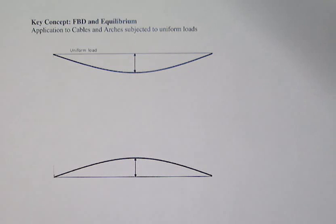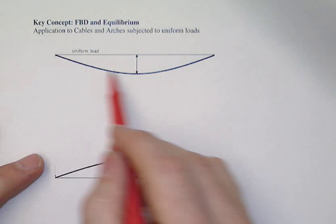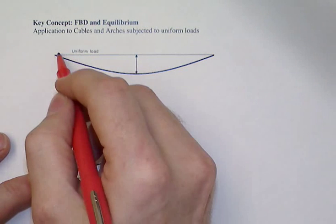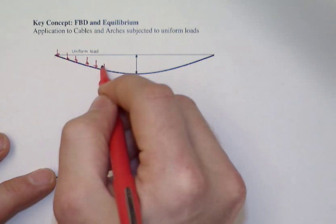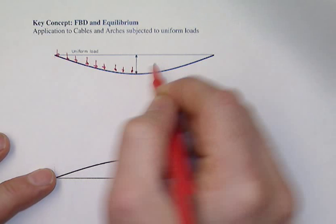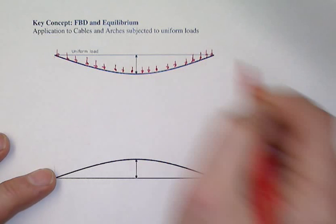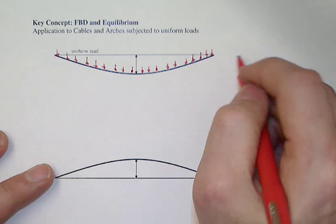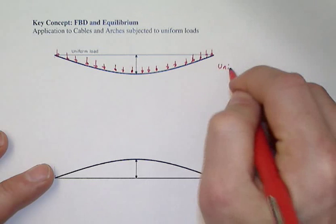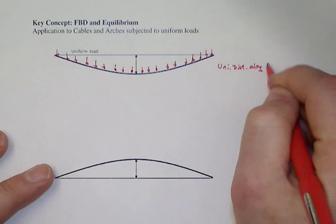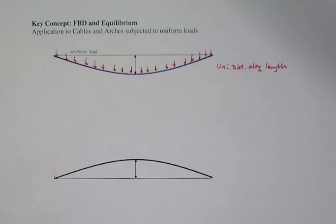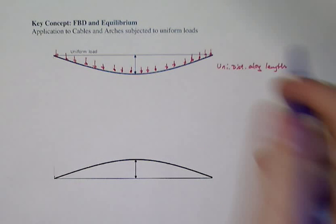Key concepts of application of equilibrium to cables and arches have a lot to do with the constraints under which we're doing these models. In the case you see here, we have a cable with some sort of uniform load applied to it. When it responds to a uniformly distributed load along its length — such as self-weight — where that load is uniform along the arc length, we end up with a catenary expression.